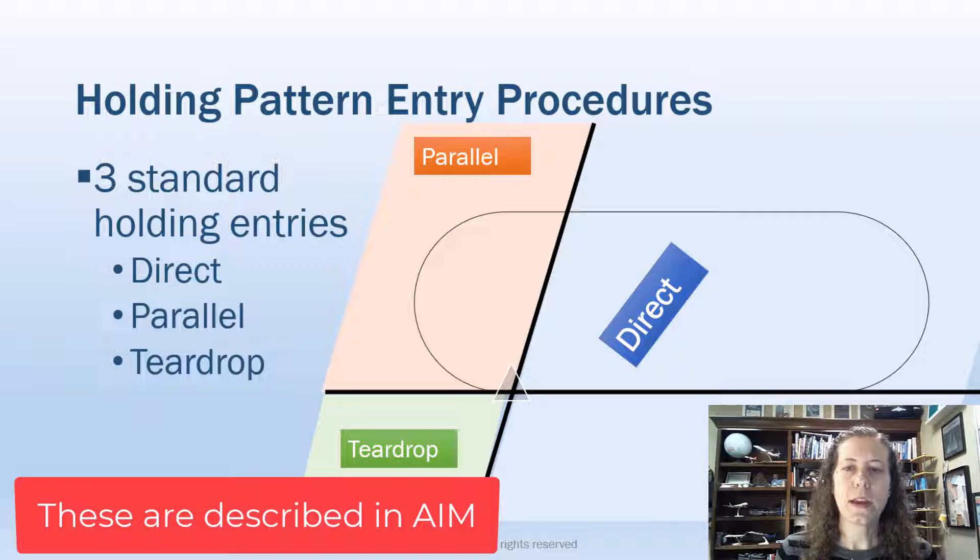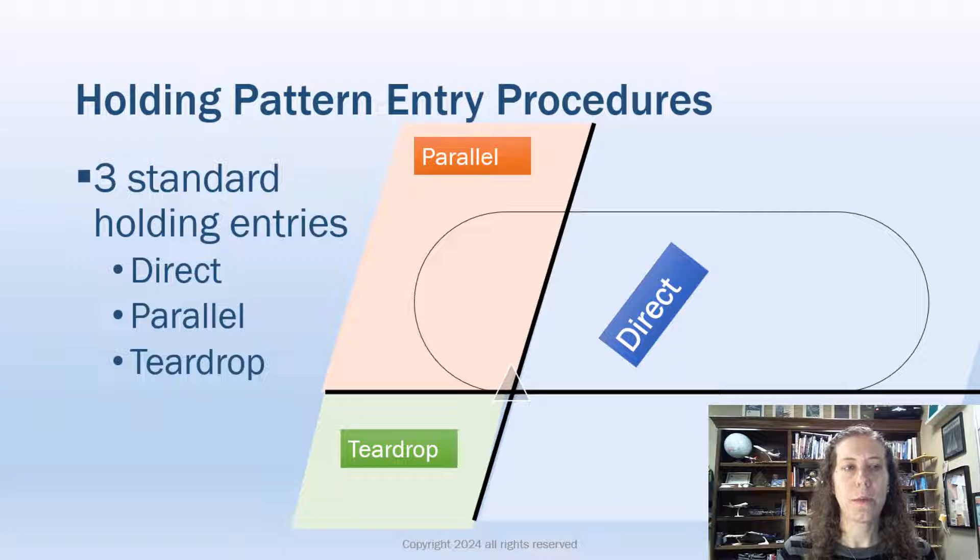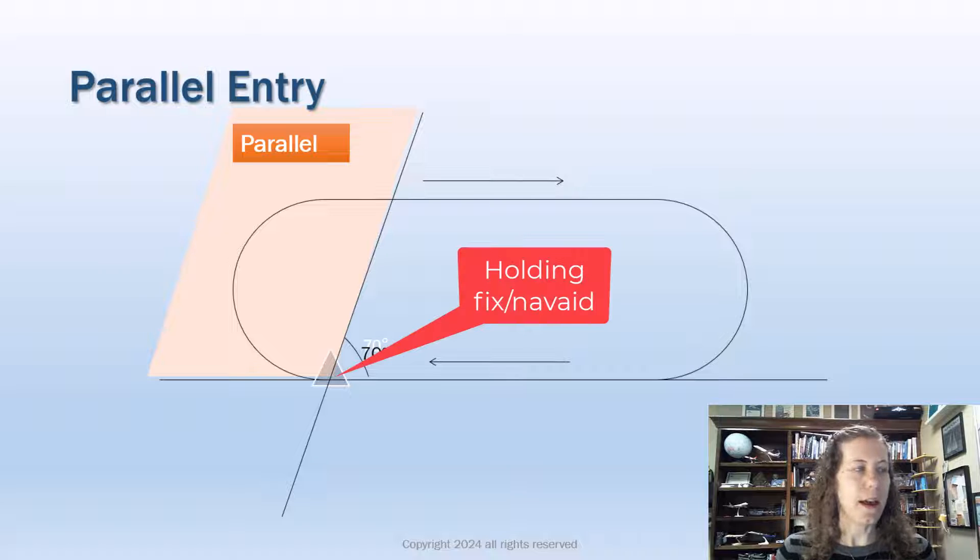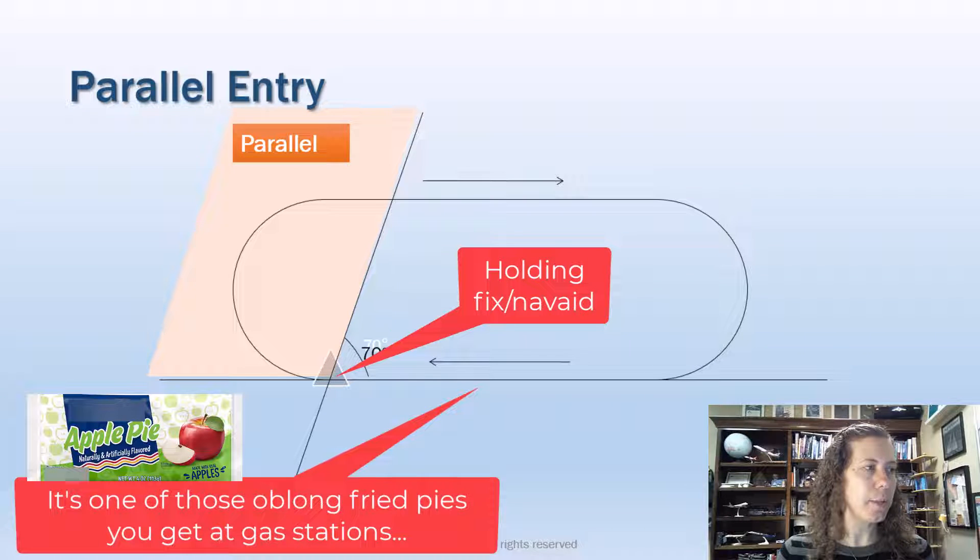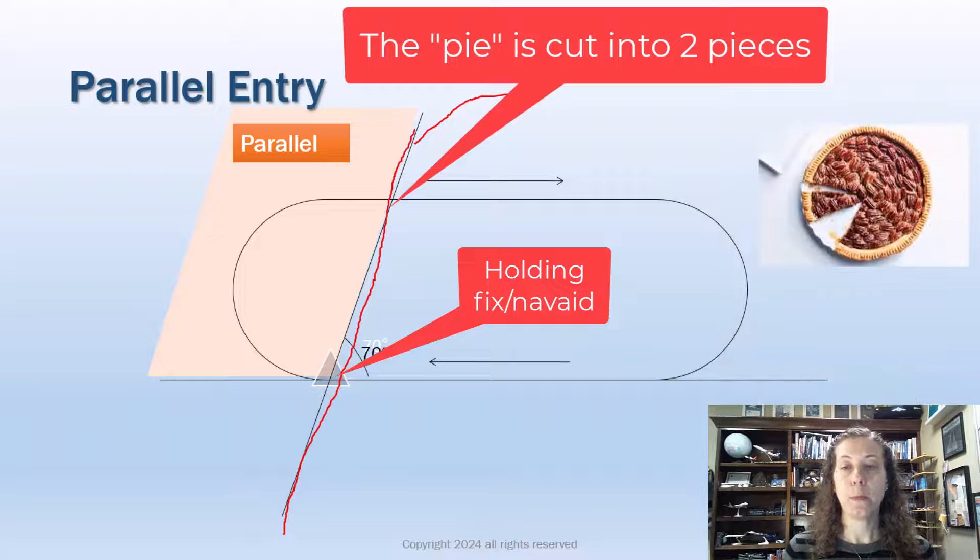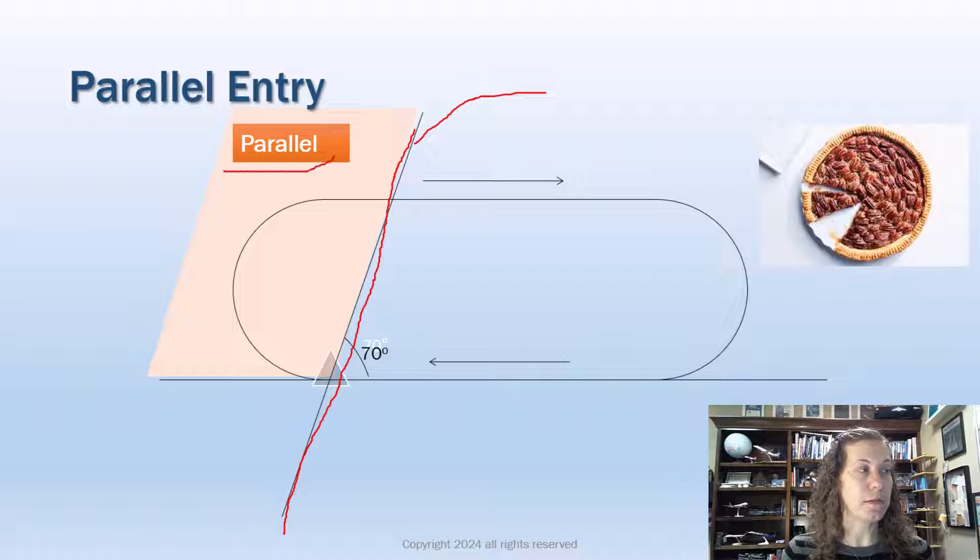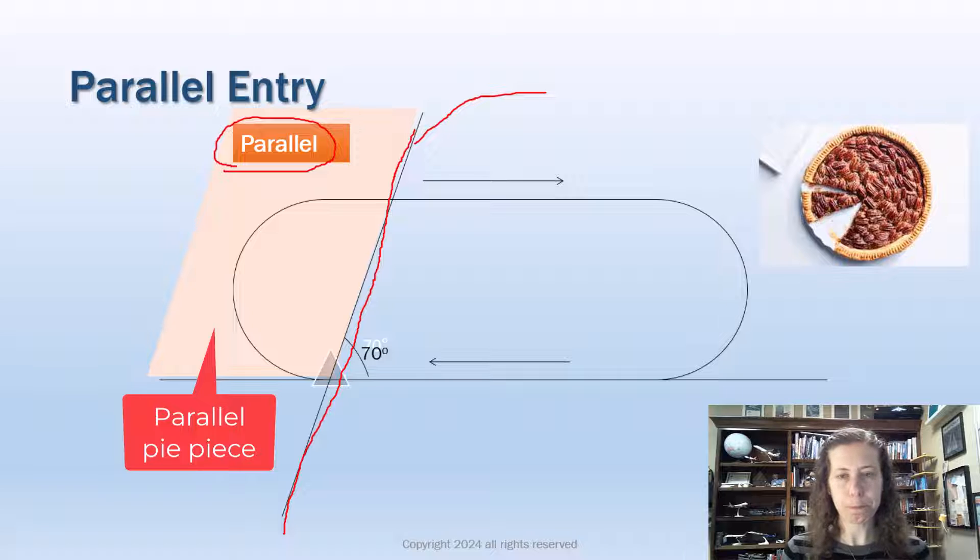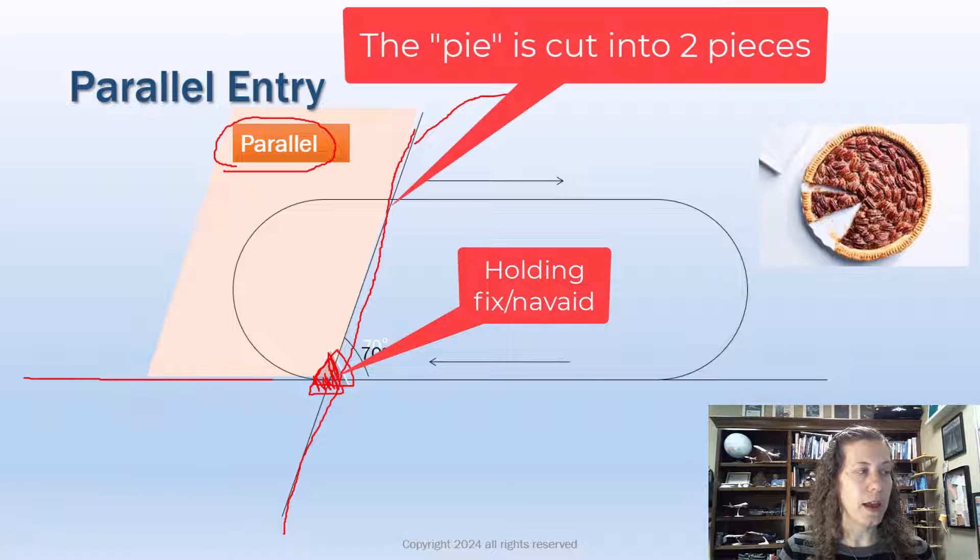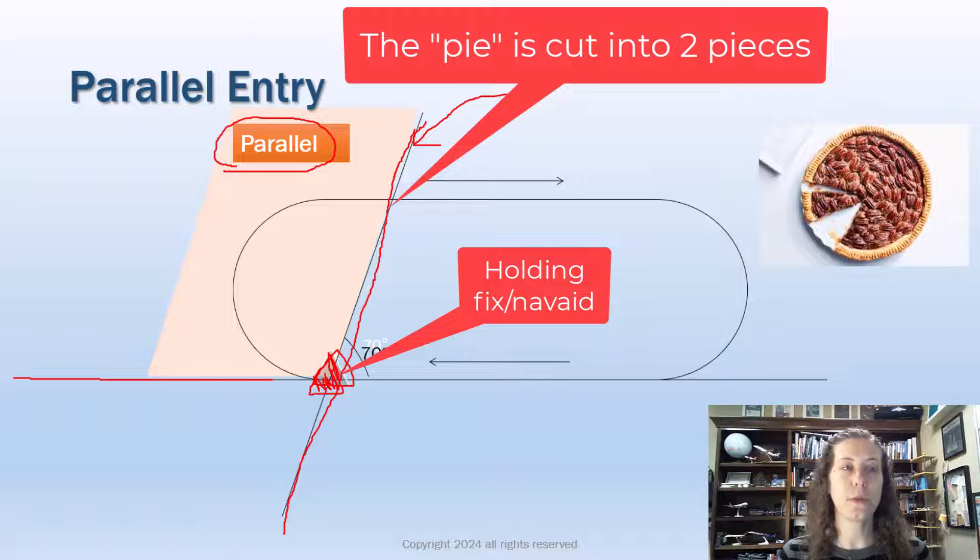Now if you take a look at these patterns individually, we have parallel, and that is the first one I'm going to talk about. I like to think of a holding pattern like a pie. If you notice, I have a piece of the pie that is cut by a long line that goes right through the middle of the pie. The smaller piece of the pie we call the parallel piece of the pie. We can cut that pie by—here is my holding fix that the pattern is centered around. We'll color that in. I've got a line that is coming straight out from that fix and then I have this other parallel drawing line that goes right through the middle of the pattern.